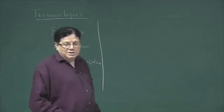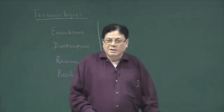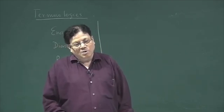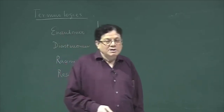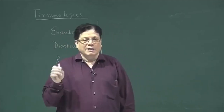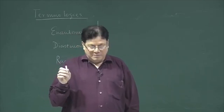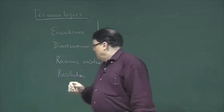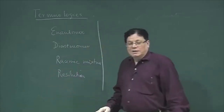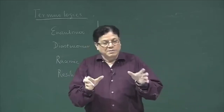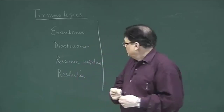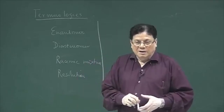Diastereomers: they are stereoisomers but they are not mirror images of each other. What about the chirality of diastereomers? They may be chiral or they may be achiral — both. Racemic mixture: it is a 50-50 mixture of the two enantiomers.